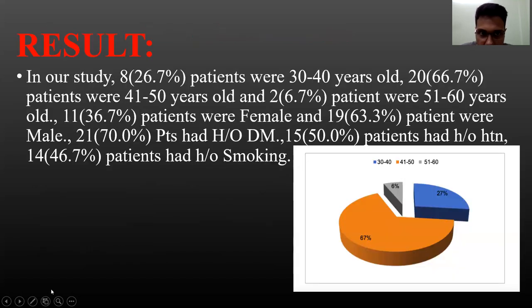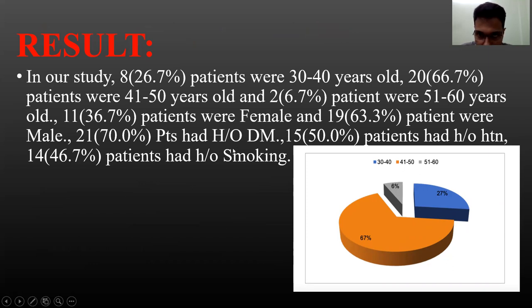In our study, 8 patients (26.7%) were 30 to 40 years old, 20 patients (66.7%) were 41 to 50 years old, and 2 patients (6.7%) were 51 to 60 years old. 11 patients were female and 19 were male. 21 patients had a history of diabetes mellitus, 15 had a history of hypertension, and 14 had a history of smoking.